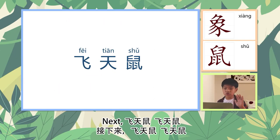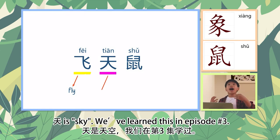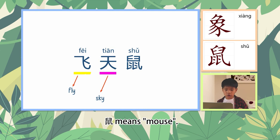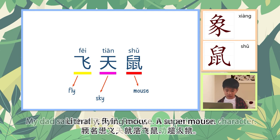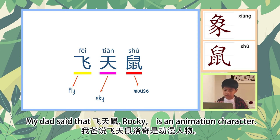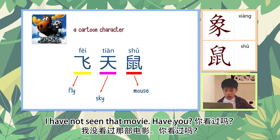Next: 飞天鼠. 飞天鼠 means bat — literally, a flying mouse, a super mouse! My dad said that 飞天鼠, Rocky, is an animation character. I have not yet seen that movie — have you?